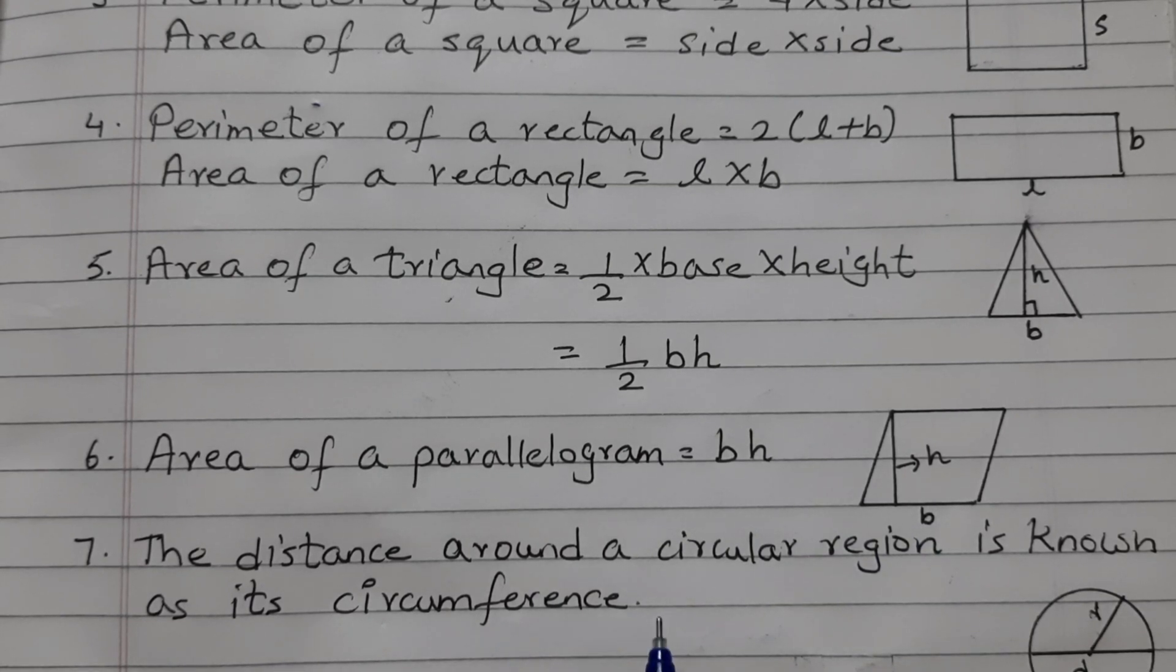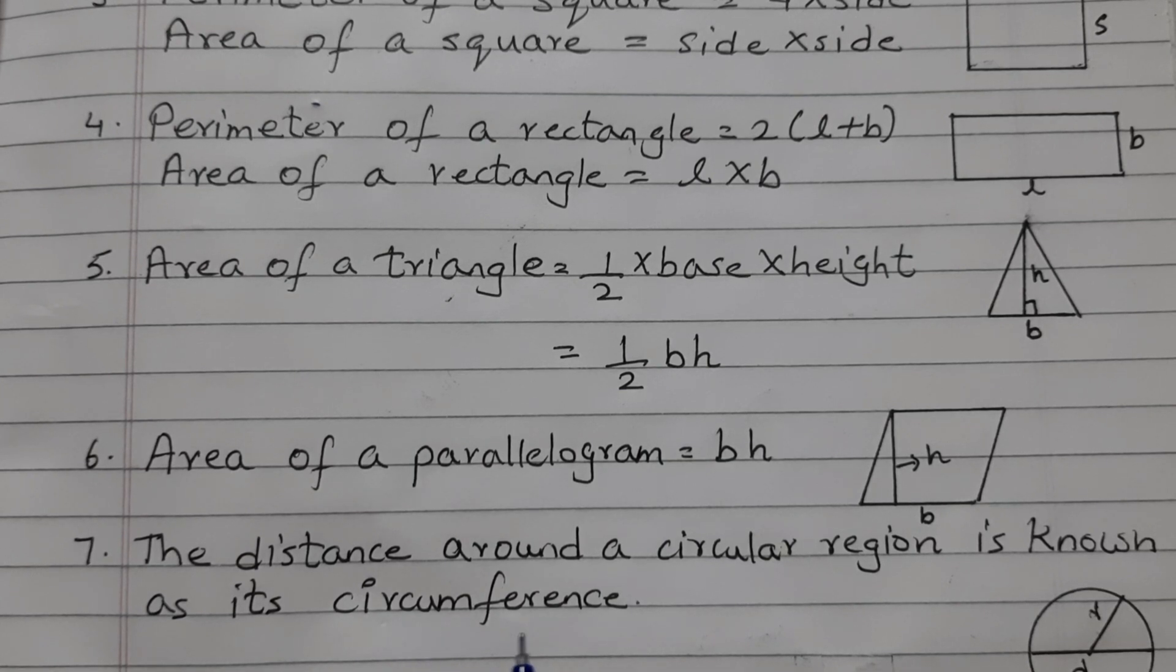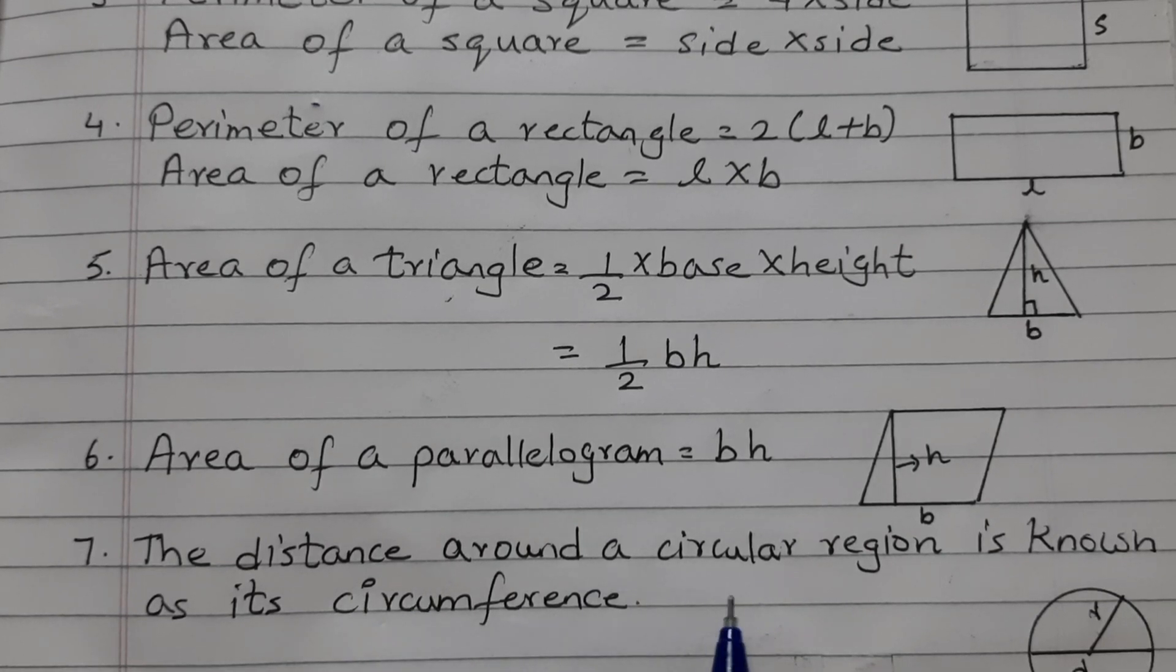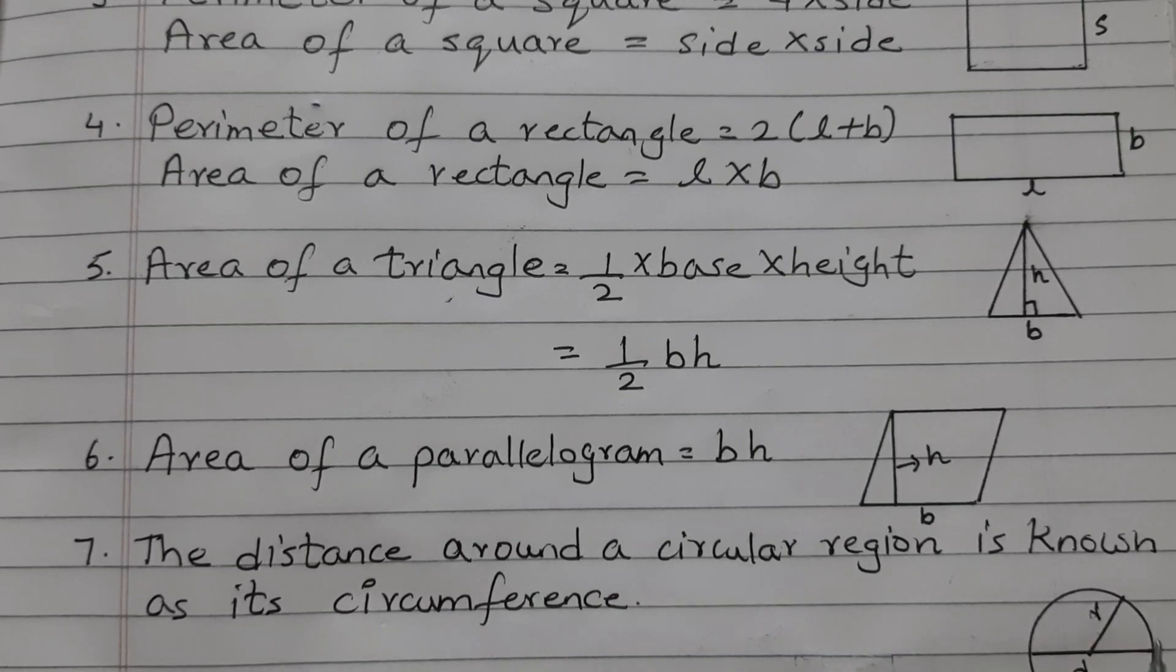The distance around a circular region is known as its circumference. In a circle, we do not use the word perimeter. For the boundary, we use the word circumference. So the distance around a circular region is known as its circumference.